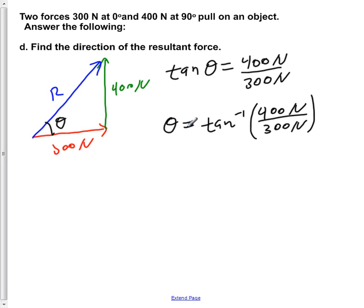Tan inverse of that is equal to theta. If we now evaluate this we would find that theta is equal to approximately 53 degrees. So here we have just calculated the direction of our resultant vector R to be 53 degrees with respect to the X axis.